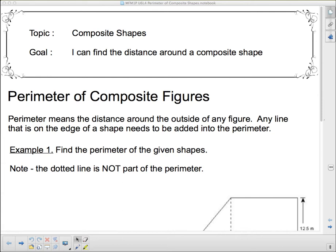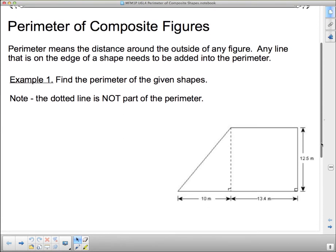Perimeter generally is the easier thing to find for some because you just add up all the sides. But here, there's no formula for anything. You just have to make sure that you have all of the sides that go around a shape and add them up. So our goal today, I can find the distance around a composite shape. Looking at the perimeter, and remember, perimeter is distance around.